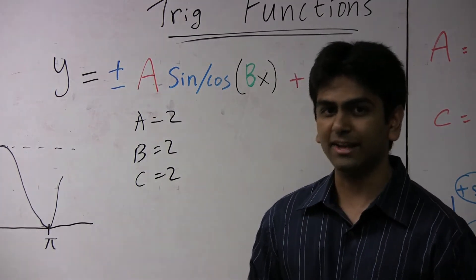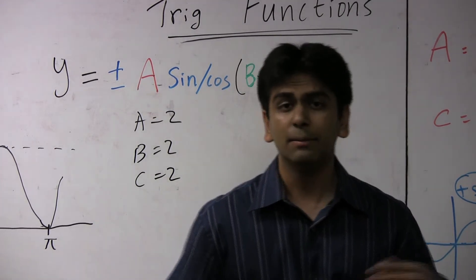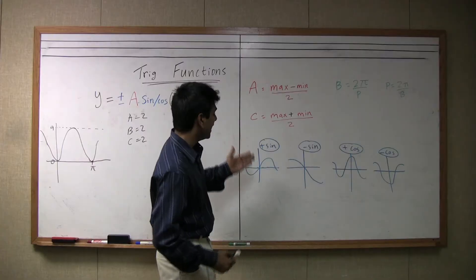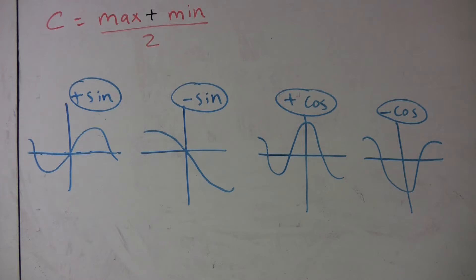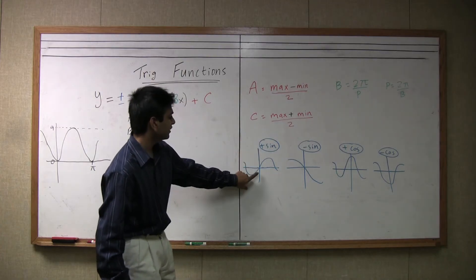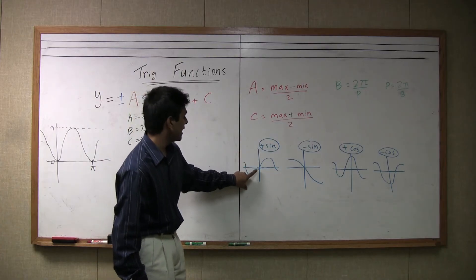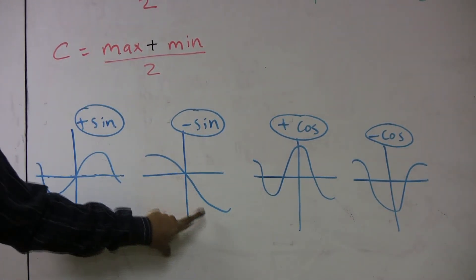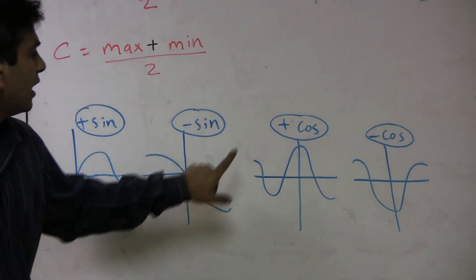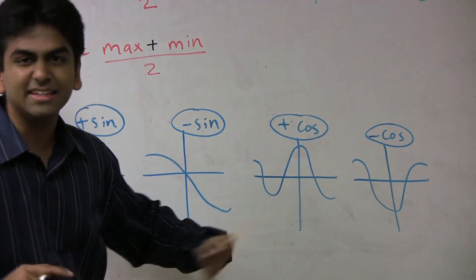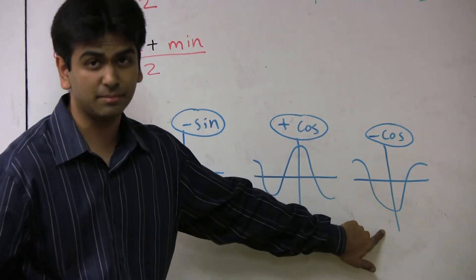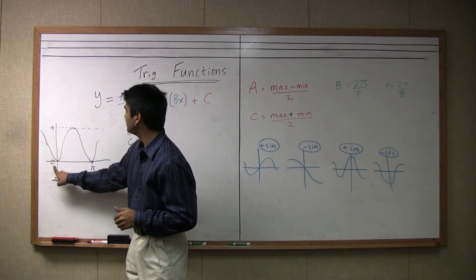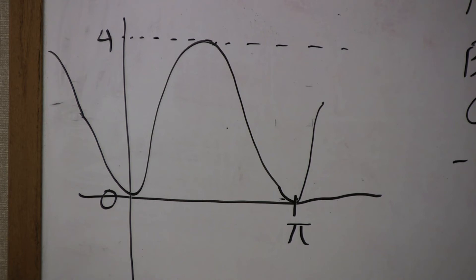Now the last thing we have to look at is whether this graph is a positive sine, a negative sine, positive cosine, or negative cosine. As we can see, these pictures over here depict what a typical graph for each type will look like. A positive sine starts at the center line and goes up. A negative sine starts at the center line and goes down. A positive and negative cosine, these start at the extreme. So a positive cosine starts at the maximum and a negative cosine starts at the minimum. So looking at this, we see that at zero, this is at its minimum. So we know that this graph is a negative cosine.